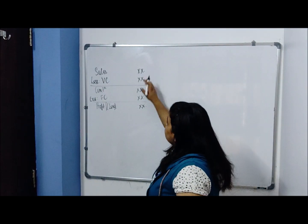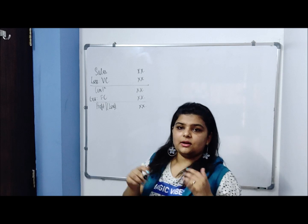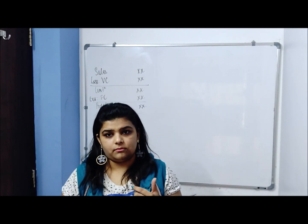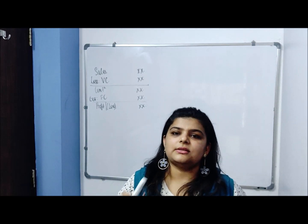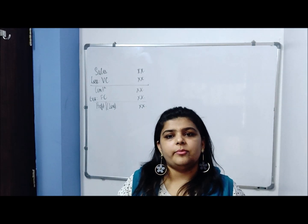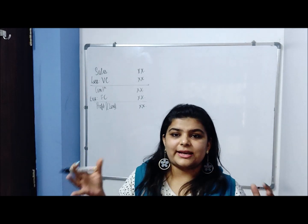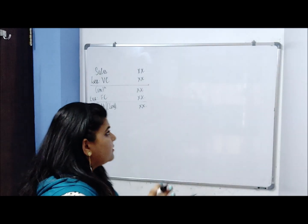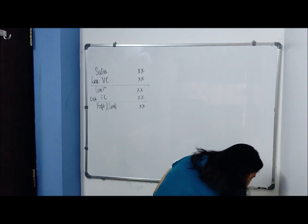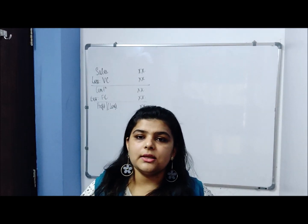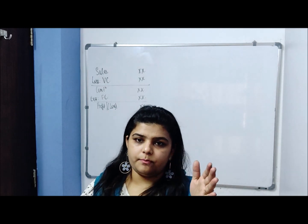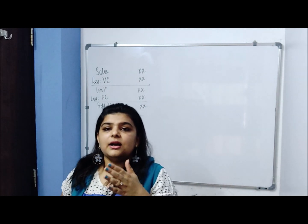Today we will elaborate on that statement. We all know there are various kinds of overheads and various kinds of direct expenses like direct costs, direct material, direct labor. So how do we club these into the statement? In your exams, you might get a 10, 15, or 17 marker question on the statement to be prepared under the marginal costing approach and under the absorption costing approach.